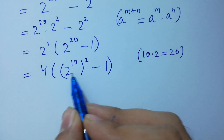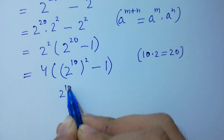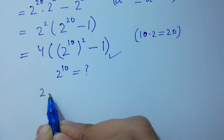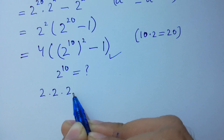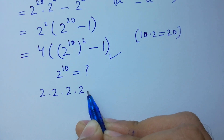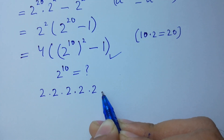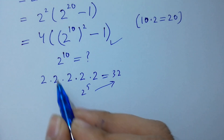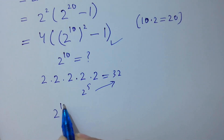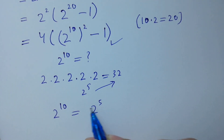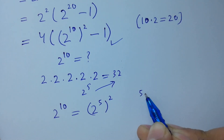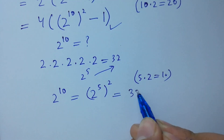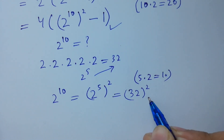Next, we are going to find what is 2 to the power 10. Since 2 times 2 is 4, 4 times 2 is 8, 8 times 2 is 16, 16 times 2 is 32, which is 2 to the power 5. So to find 2 to the power 10, it is the same as 2 to the power 5, to the whole power 2, since 5 times 2 equals 10. Put 2 to the power 5, which is 32, to the power 2.